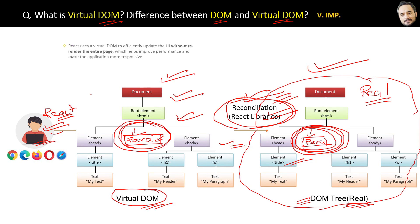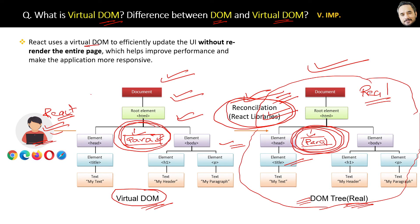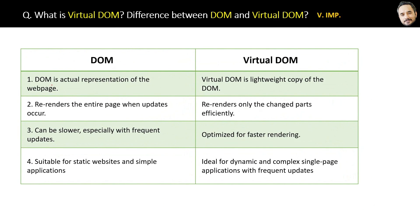The conclusion is: React uses a Virtual DOM to efficiently update the UI without re-rendering the entire page, which helps in improving performance and makes the application more responsive. Here are the four differences between DOM and Virtual DOM — you can pause the screen and read them, or refer to this later for quick revision.